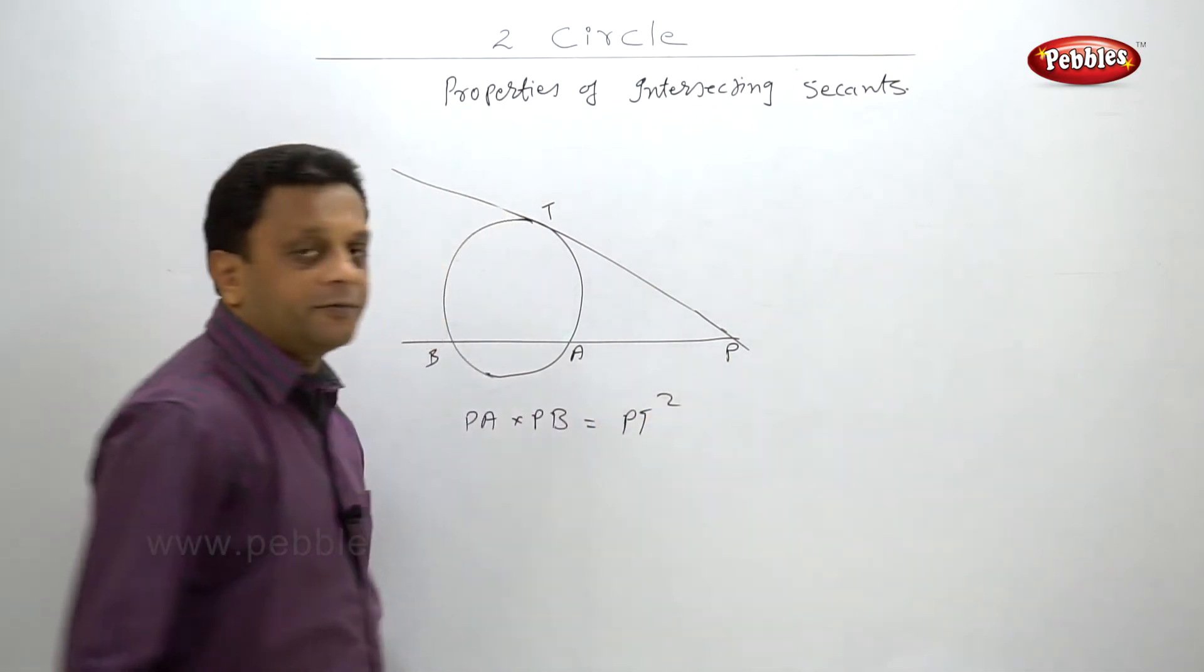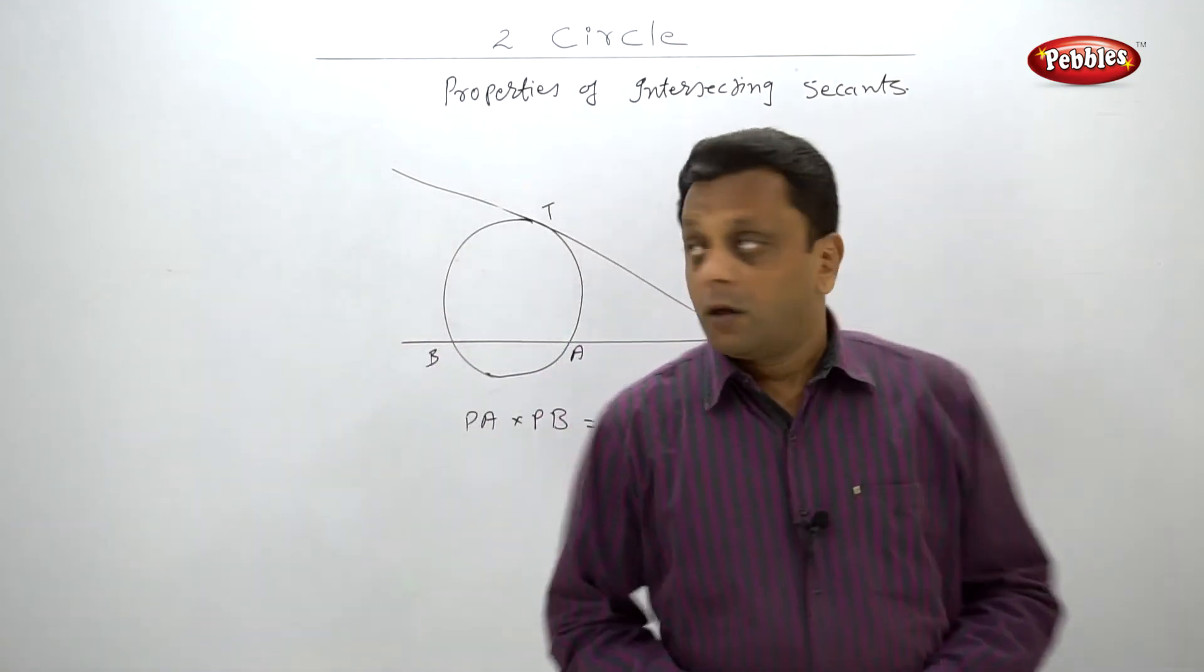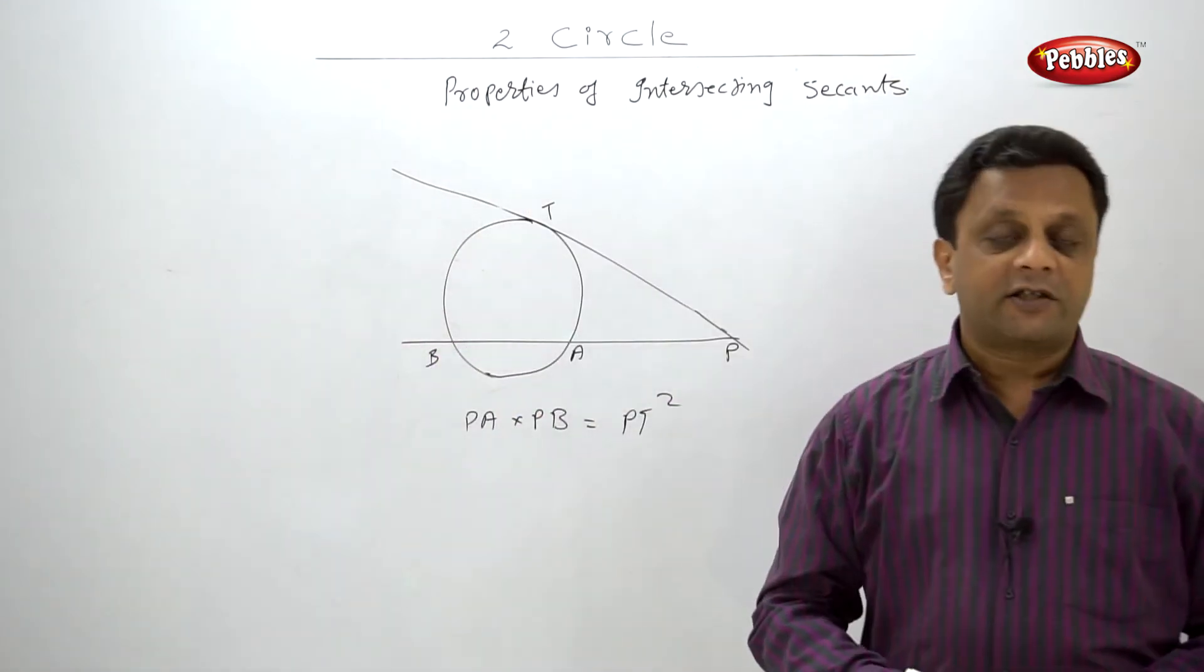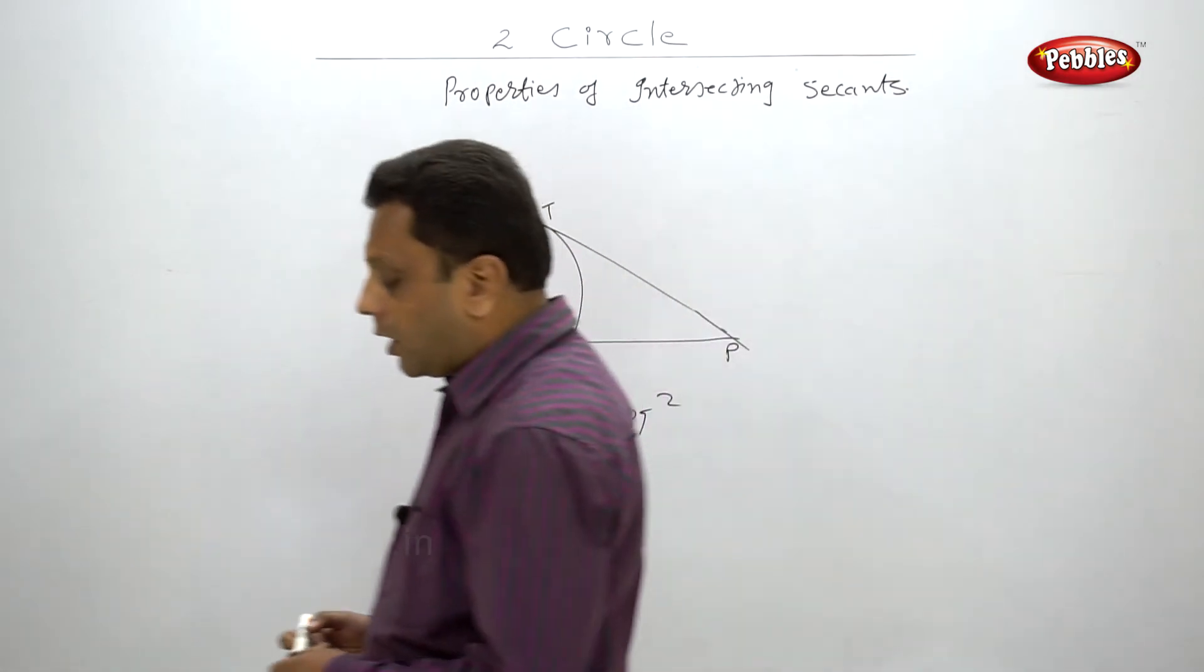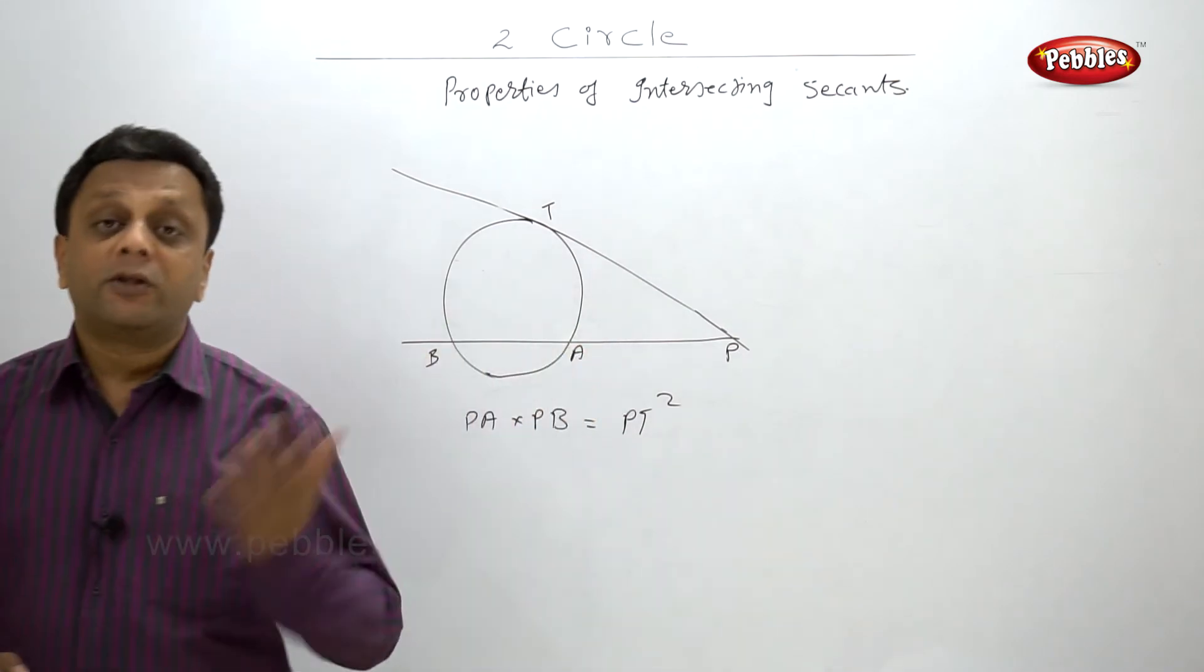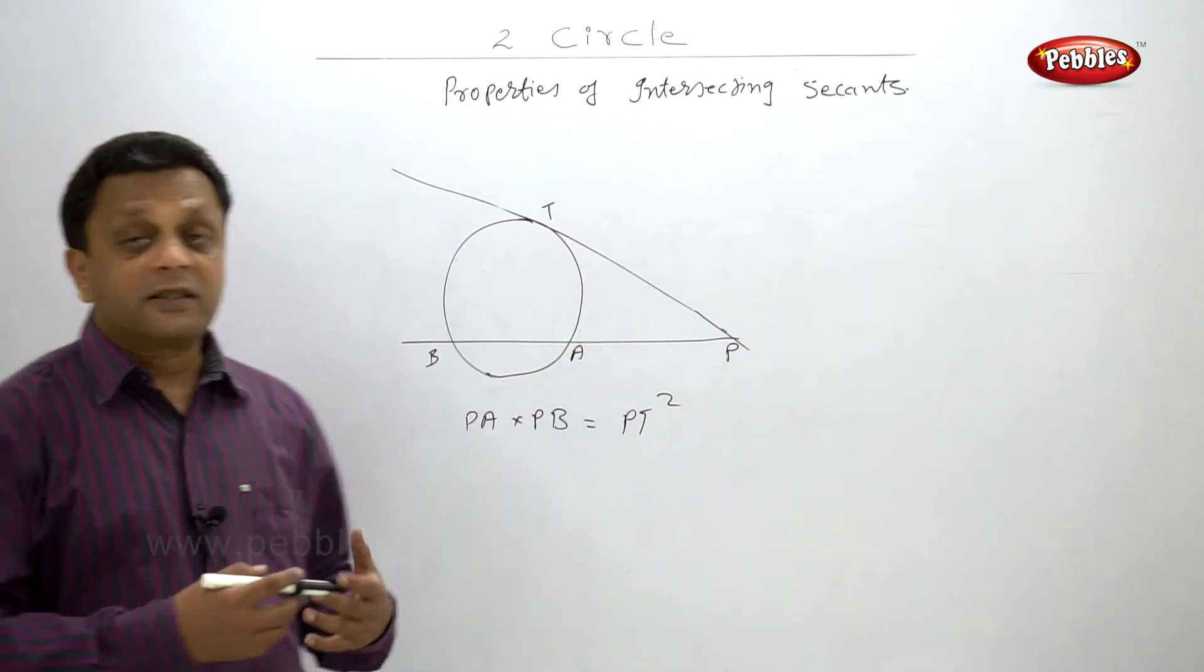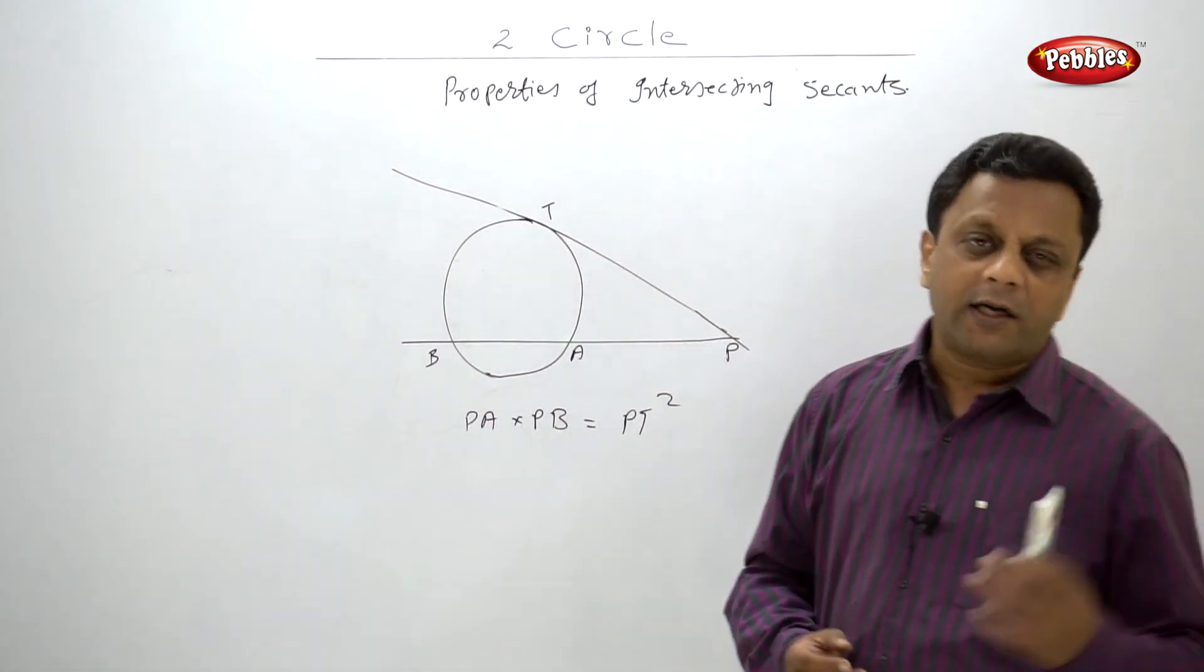So based on these properties of intersecting secants we have to solve some problems. But this property may not, or I can say will not, come alone. That means the problem will hardly be based on just these properties.